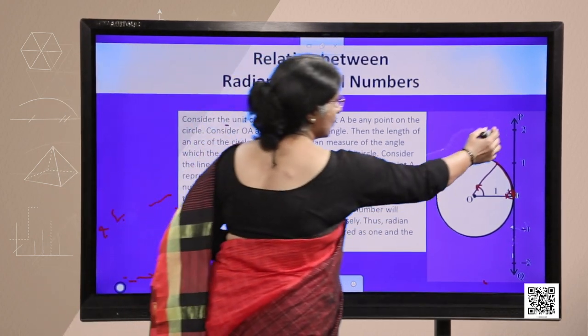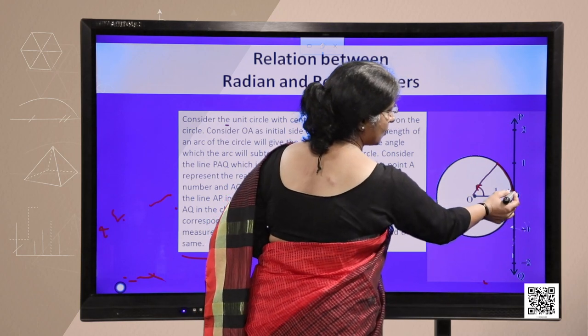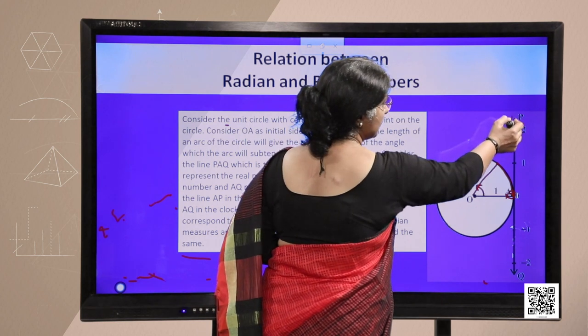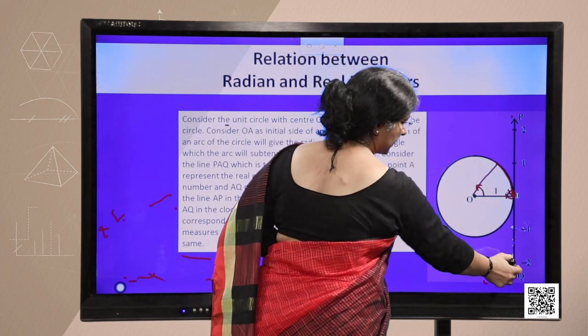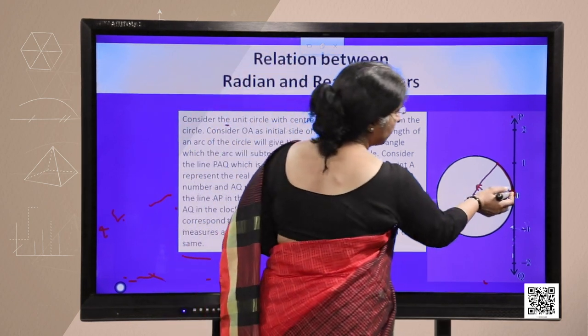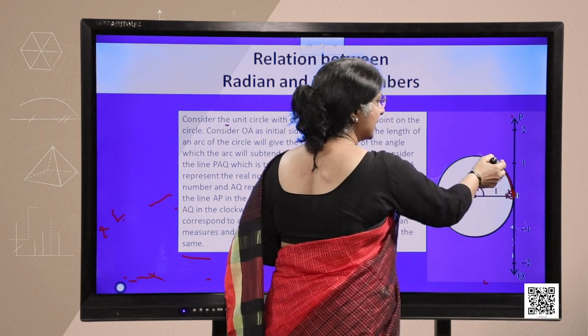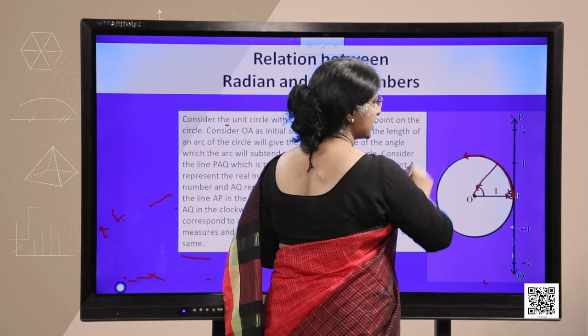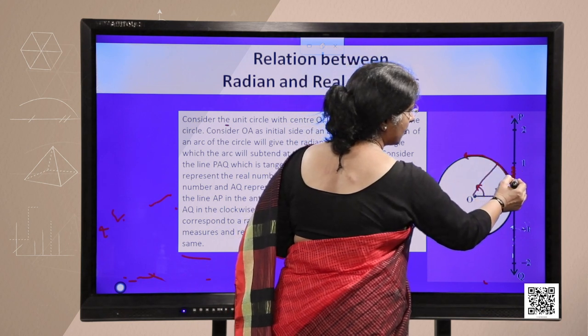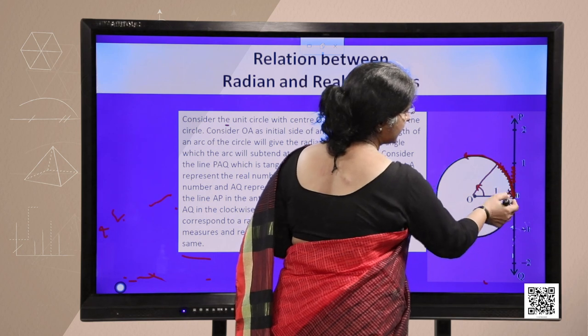Consider a line PQ as tangent to the circle, where O if we consider as origin of real number line, and OP in the positive direction, and OQ represents negative direction in the real number line. If we rope in this OP on the circle, in anticlockwise direction, then every point on this real number will correspond to radian measure on this circle.